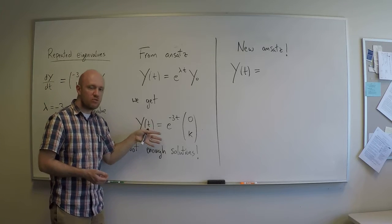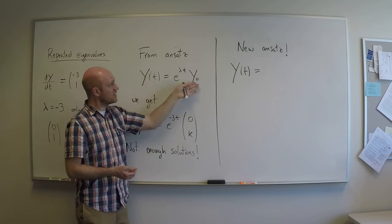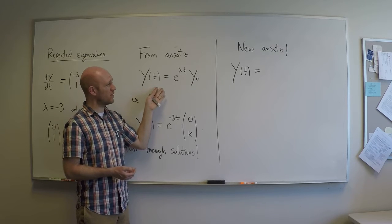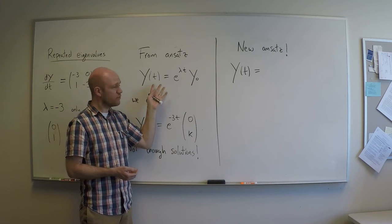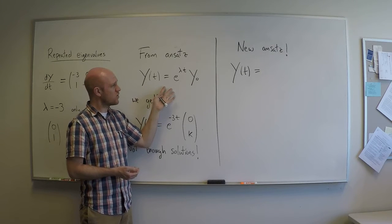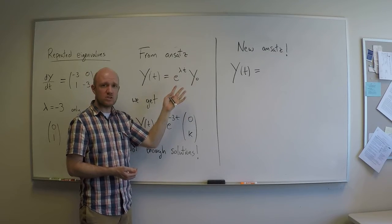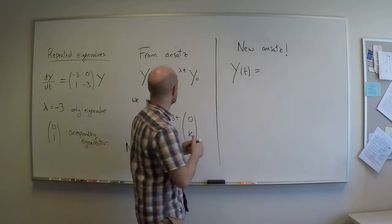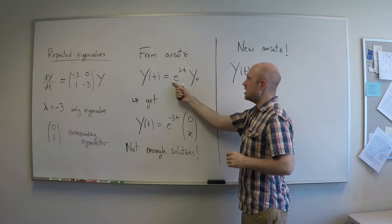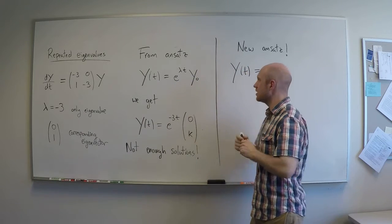So we have to revisit our ansatz. We go back to this ansatz again and say, let's make a different ansatz, maybe one that's a little more sophisticated, a little more complicated, to try to find more solutions. So our new ansatz is going to be, well, let's keep the old one, let's add on a little more complexity. So let's keep the e^(λt)y0, and now let's add on another function times a vector.